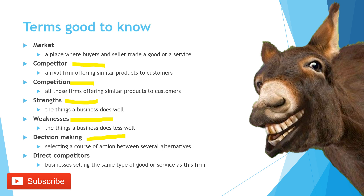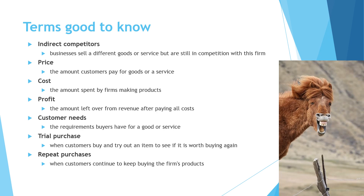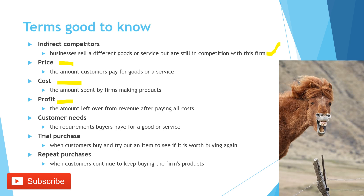Decision making: selecting a course of action between several alternatives. Direct competitors: businesses selling the same type of good or service as this firm. Indirect competitors: businesses that sell a different service or goods but are still in competition with this firm. Price: the amount a customer pays for goods or services. Cost: the amount spent by a firm making products. Profit: the amount left over from revenue after paying all costs.